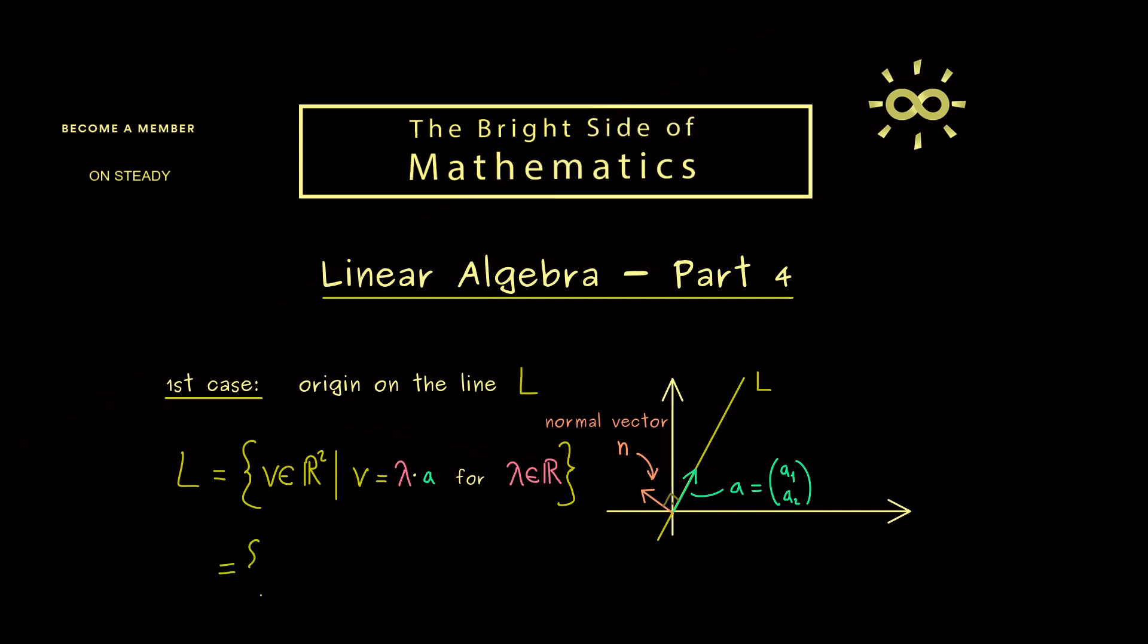So we only need a so-called normal vector N to define this set. More precisely, we would say this is the set of all vectors V with the property that the inner product of N with V is exactly 0. Because this is what orthogonal means.